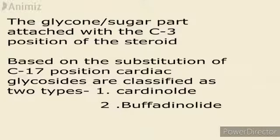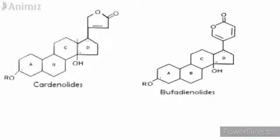The two types are cardenolides and bufadienolides. In the case of cardenolides, at the C17 position there is a five-membered lactone ring with one double bond. In the case of bufadienolides, there are two double bonds in the lactone ring at C17. This is the only structural difference between cardenolides and bufadienolides. In both structures, the R group at C3 represents the glycone or sugar part.